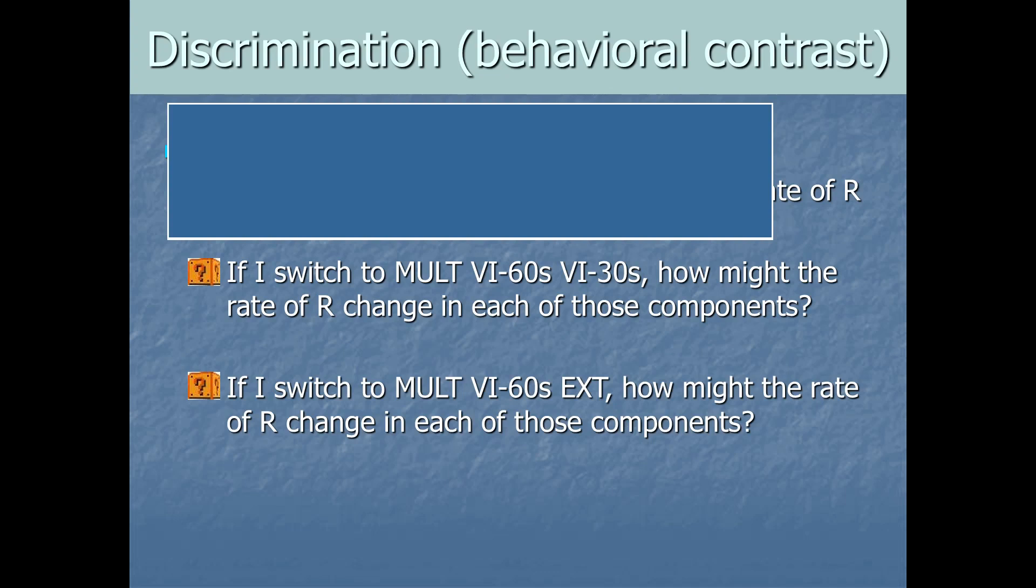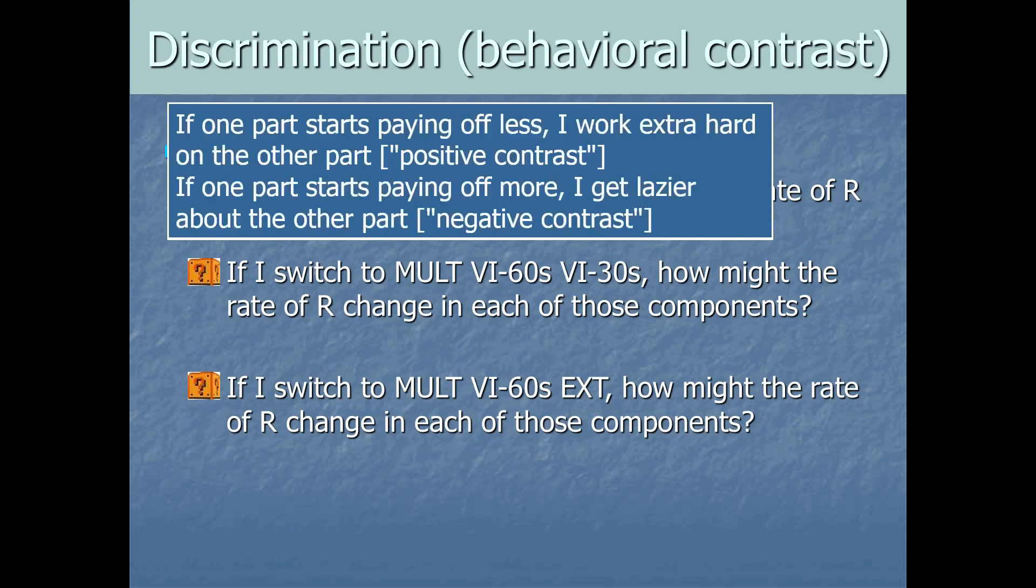So in the extinction condition, we would expect the rate of behavior to go down, eventually maybe to zero. But due to behavioral contrast, we would expect a higher rate of responding during the other option, even though we haven't changed its schedule of reinforcement at all. So in this case, it would be considered positive contrast. That's if one part starts paying off less, I work extra hard on the other part. That's what's going on here. In other words, now that schedule two sucks ass, it makes schedule one look more positive. Whereas negative contrast would be if schedule two starts being awesome, it makes schedule one look more negative. That's negative contrast.